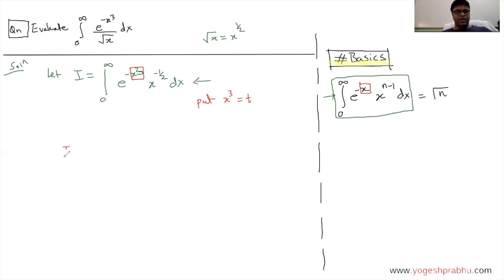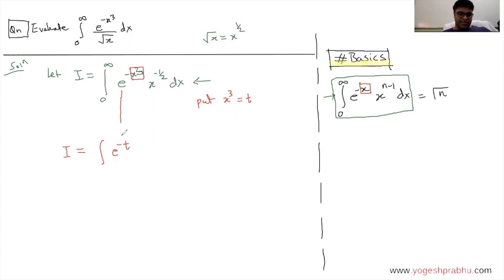After the substitution, the integral I will become, with changed limits, e to the minus t — and you can see this matches the standard form perfectly. E to the minus t is equivalent to e to the minus x. The initial integral was in terms of x, and now we've substituted x cubed equal to t, so the next integral will be entirely in terms of t.